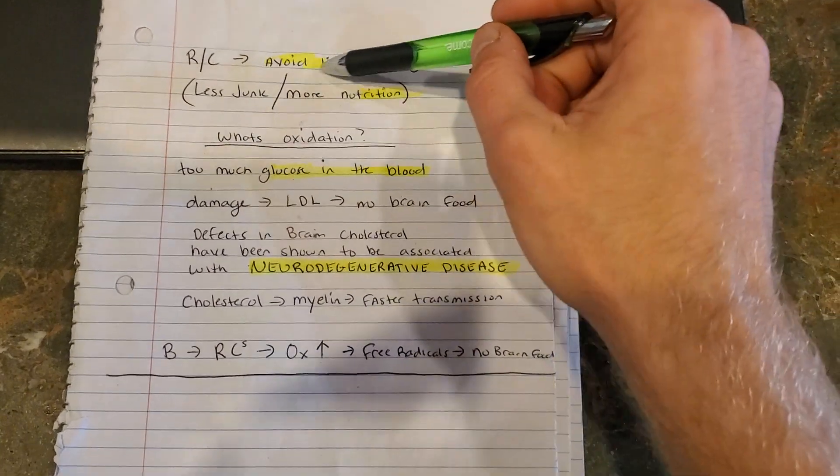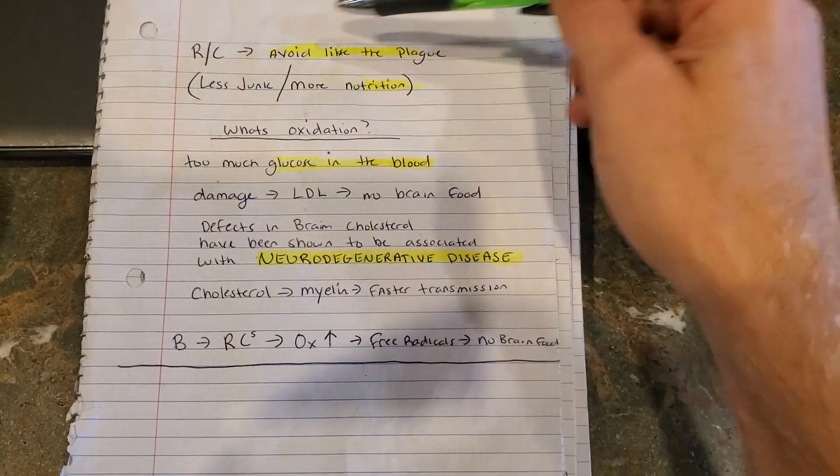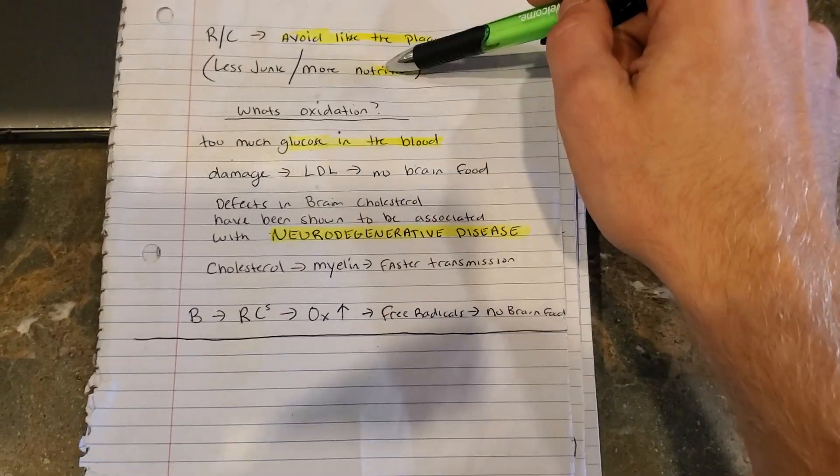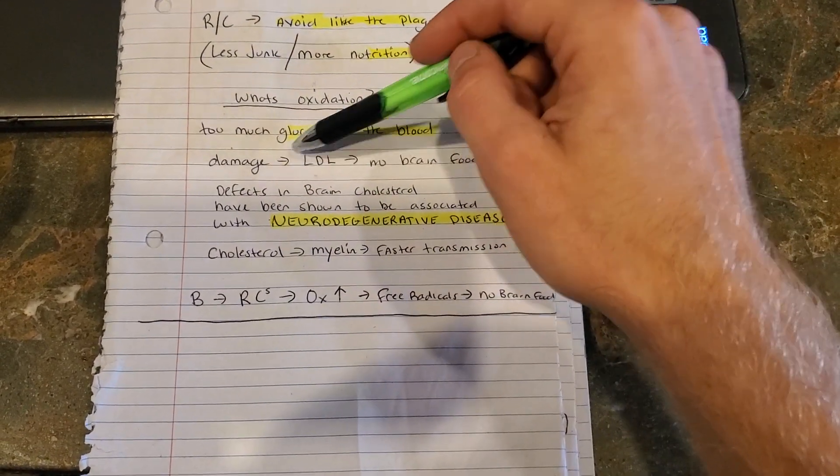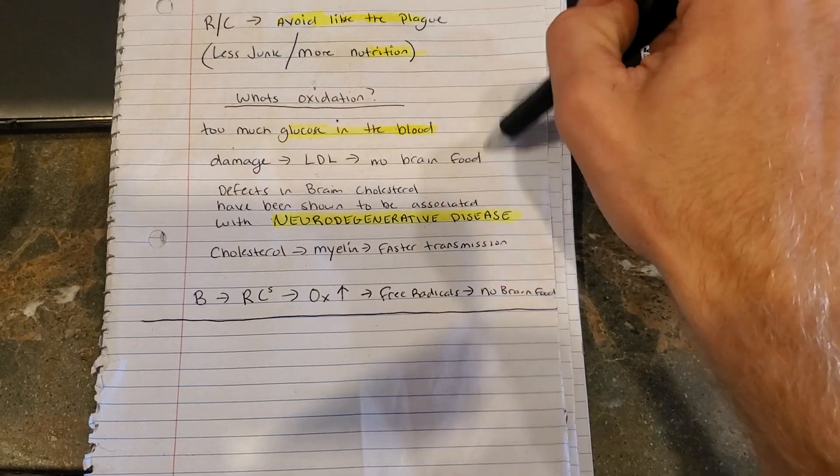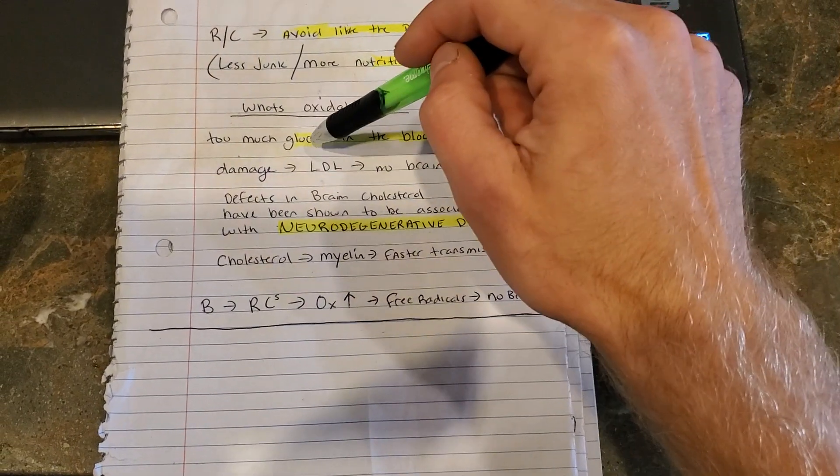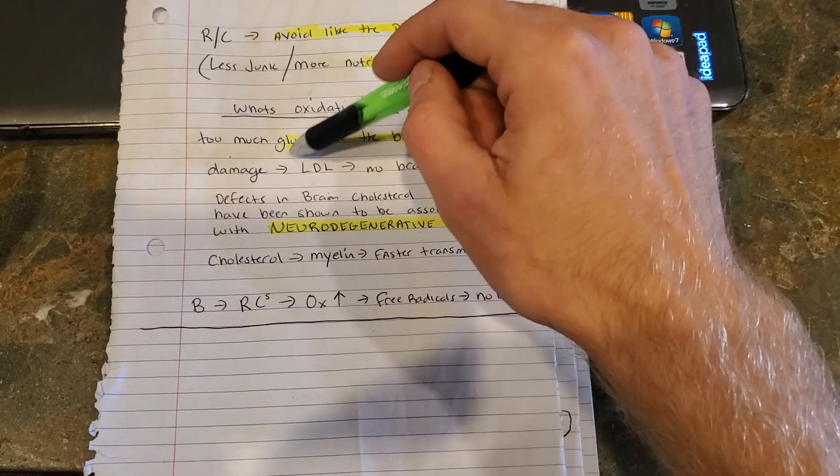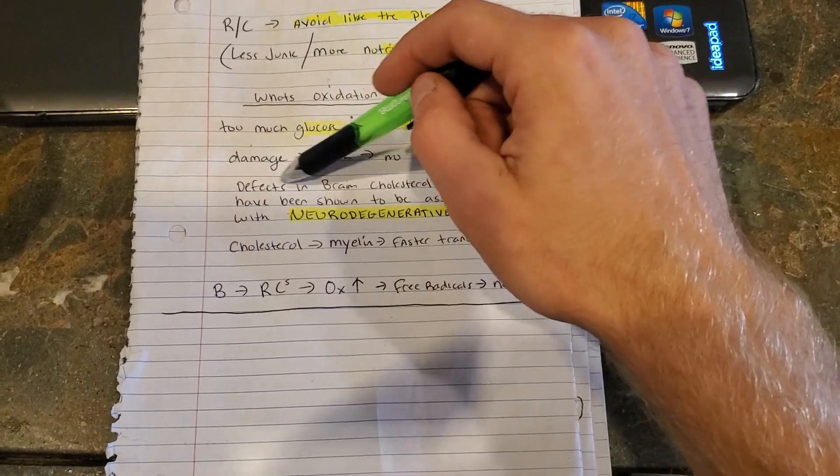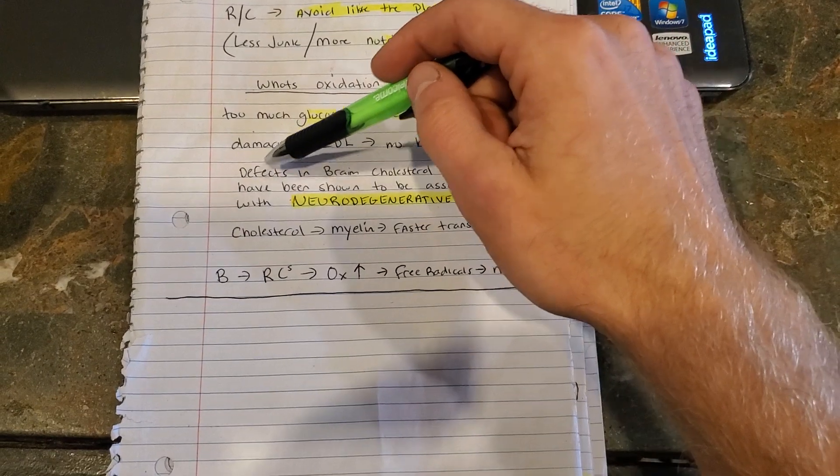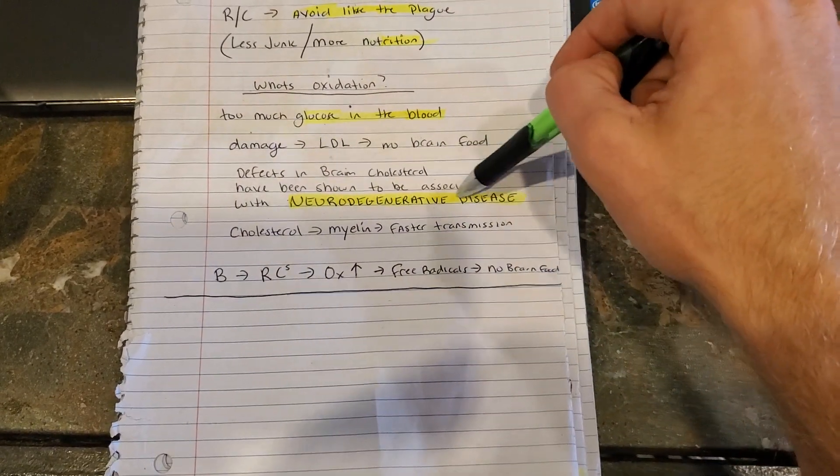So once again, refined carbohydrates, avoid them like the plague. Less junk, more nutrition. So what is oxidization? It's too much glucose in your blood. It'll damage your LDL receptors, which that transports cholesterol to your brain to feed your brain. And you're basically giving yourself an oxidized version of brain food. So it's definitely not good for your brain. It's been associated with all neurodegenerative diseases.